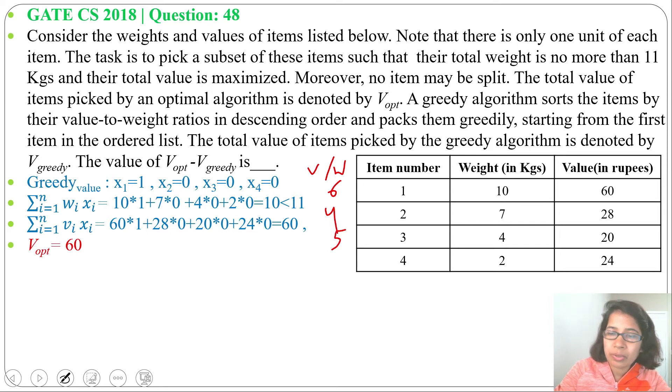For item 4: 24÷2 = 12. So in descending order, first will be item 4, next will be item 1, next will be item 3, next will be item 2.